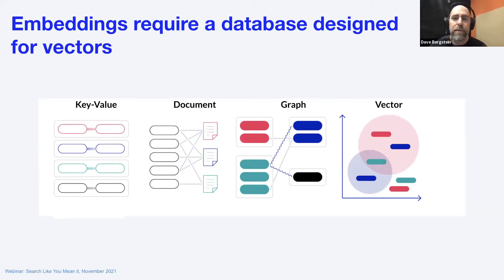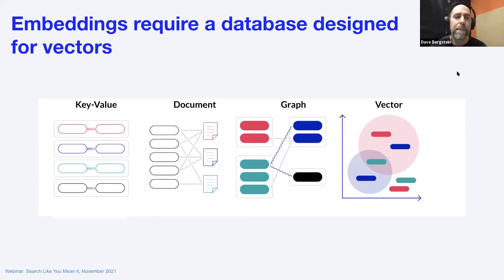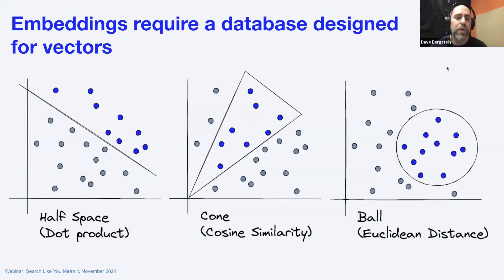Embeddings kind of break SQL. They represent complex objects, sentences, and meaning — as Niels described — and we don't expect any two embeddings to be identical. Instead, we think about them in terms of geometry. The questions we ask are not about joining tables or doing lookups, but about proximity, nearest neighbor, the geometric relation between items, or clustering. Here are some of the metrics we can use as we think about these points in this geometric space.